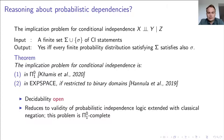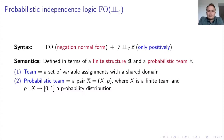Let us take a look at how probabilistic independence logic is actually defined. The syntax comprises negation normal form from first-order logic together with positive conditional independence statements. The semantics is defined in terms of a finite structure and a probabilistic team, which is simply a probability distribution over a finite team — that is, over a set of variable assignments with a shared finite domain.